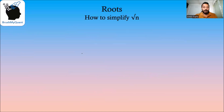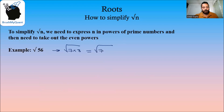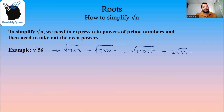To simplify √n, express n as a product of prime numbers and then extract even powers. For example, √56 = √(7 × 8) = √(7 × 2 × 4) = √(14 × 2²). The 2² can come out, giving 2√14. This is how you simplify the square root of any number.